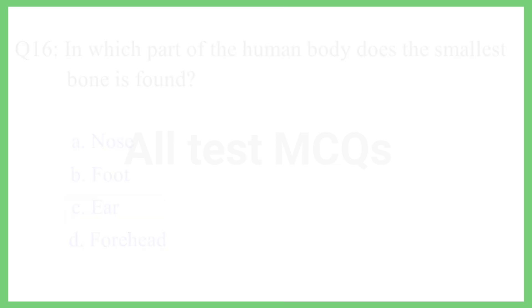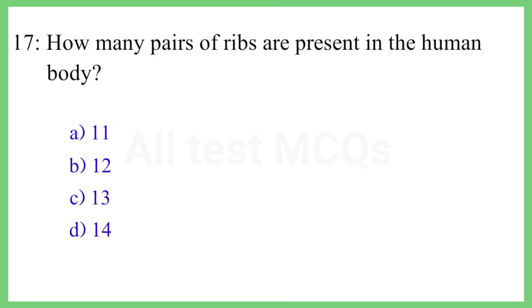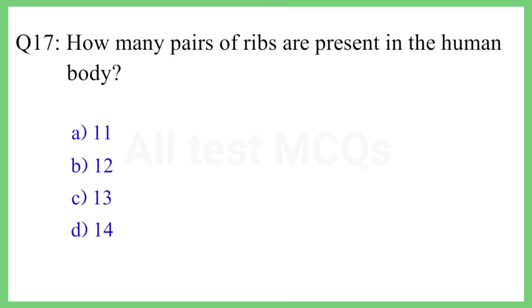Question No. 17. How many pairs of ribs are present in the human body? The correct answer is Option B: 12.